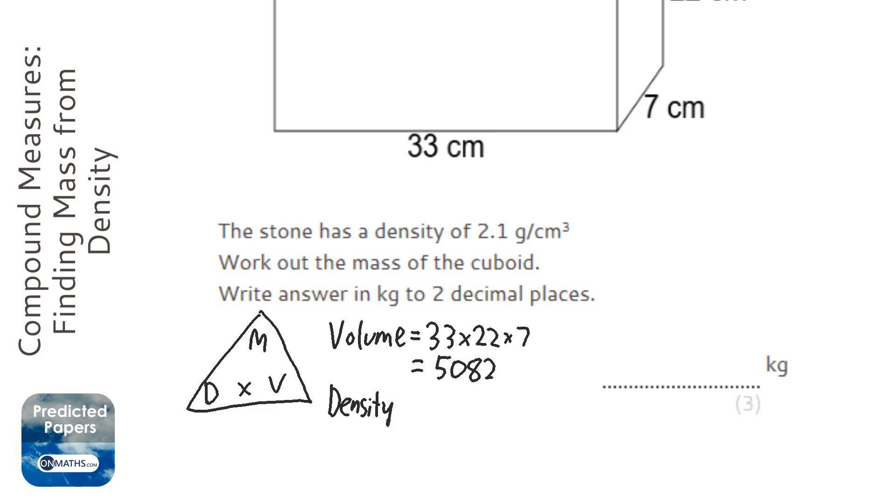Oh, to work out mass, we're going to do density times volume. So density is 2.1. Let's just check the units: grams per centimeter cubed, so that works. 2.1 times 5082.